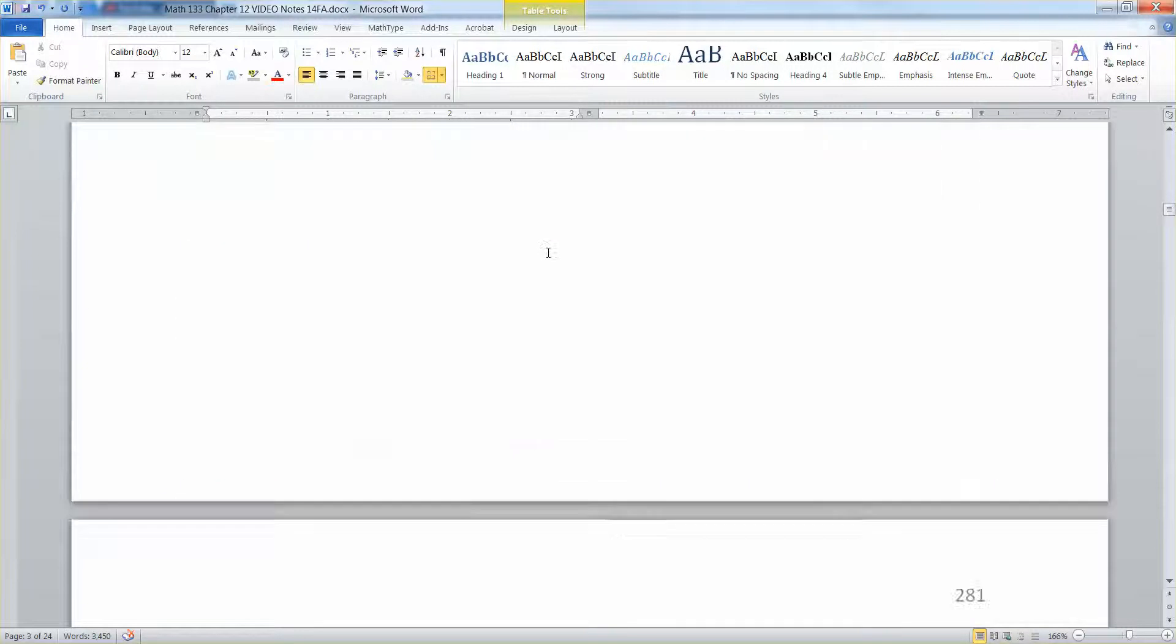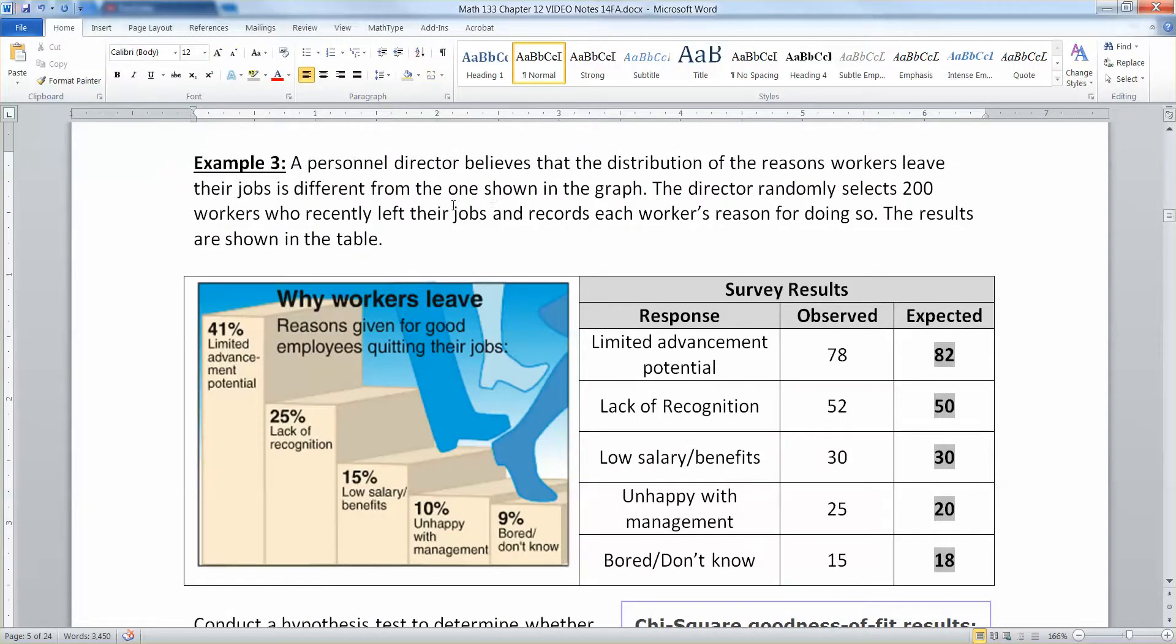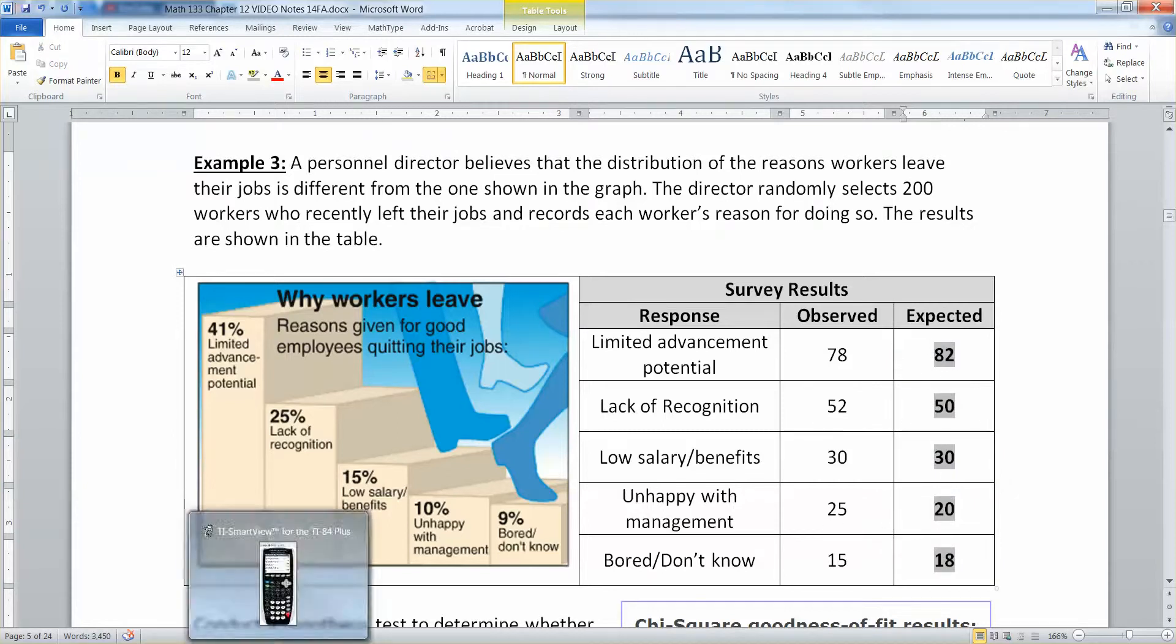Now I'm going to show you how to run it with the calculator for this test that we have right here. This is the same personnel director problem that we just saw in the previous page. We found these values right here already—82, 50, 30 and so on. I want to show you how to get this test run with the calculator.